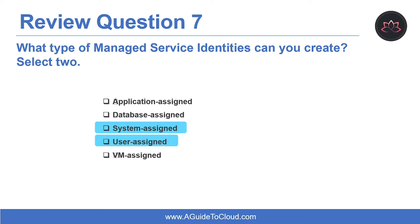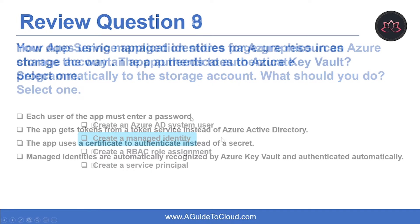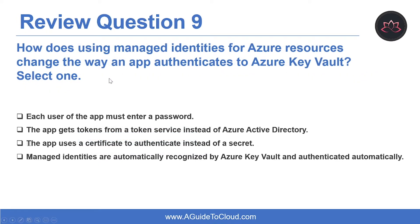Question eight: your App Service application stores page graphics in an Azure storage account. The app needs to authenticate programmatically to the storage account. The correct answer is to create a managed identity. A managed identity is an Azure AD security principal that represents the resource app; managed identities can be user or system managed.